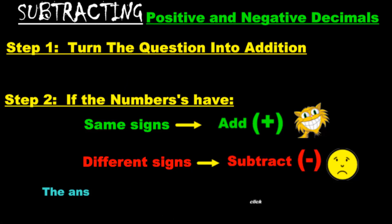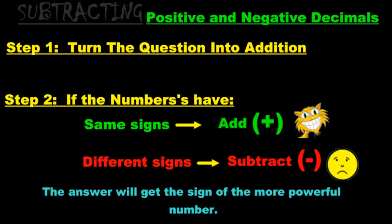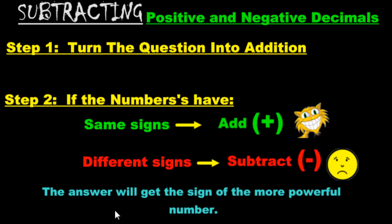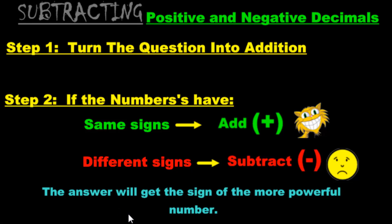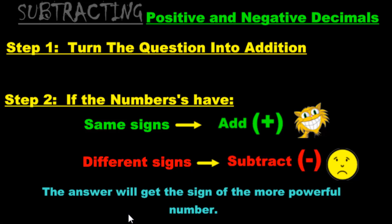The last step: the answer you get will be either positive or negative based on the question. Look at the two numbers in the question. The bigger number — once you ignore the signs and just look at the numbers — that bigger number's sign will move on to the answer. Now let's move on and do some questions.